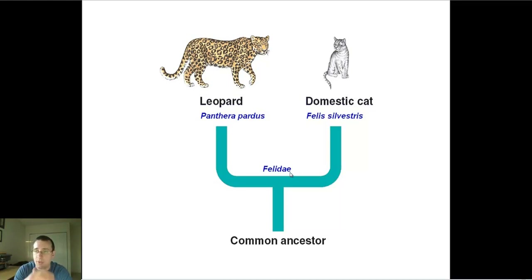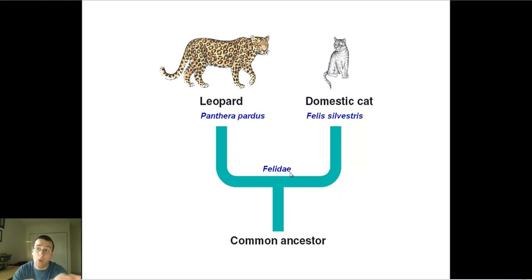The advantage of using phylogeny is that you can see the branching points of the evolutionary process and get information about how the evolutionary process actually took place.